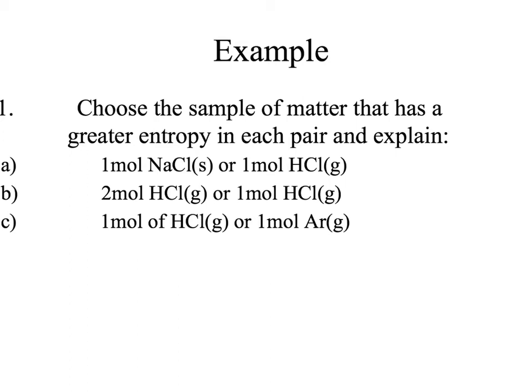We're going to choose the sample of matter that has the greater entropy in each pair and explain. First: one mole of sodium chloride solid versus one mole of hydrogen chloride gas. Same number of moles, but one is a solid and one is a gas. A gas is going to have a higher entropy because the molecules can move around more, so they can distribute their energy in more places. So the hydrogen chloride gas would have the higher entropy.